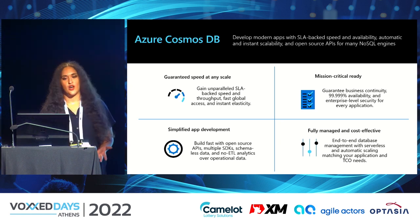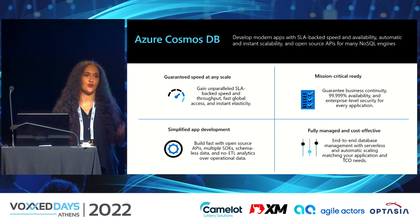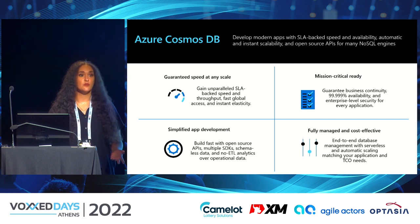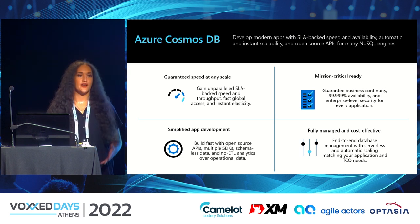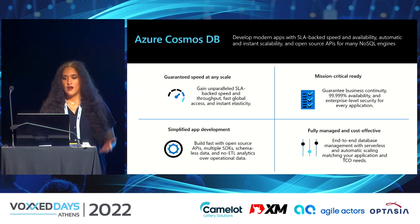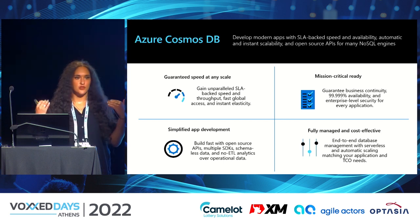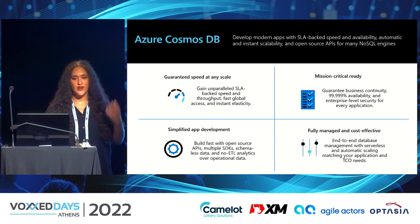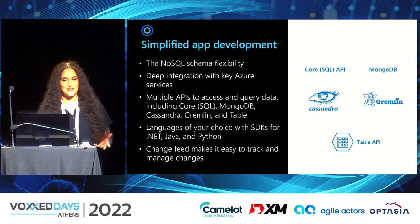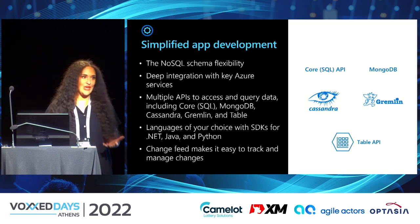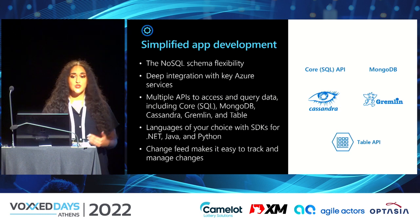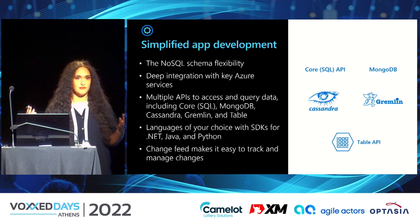Azure Cosmos DB is a cloud database developed on the cloud, for the cloud, usable by many technologies. Its benefits include guaranteed speeds at a global scale, making it mission-critical ready with replication and high availability across multiple regions worldwide. It's fully managed and cost-effective — you configure a few settings, upload your data, and the service handles everything for you.